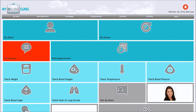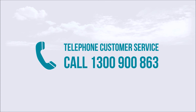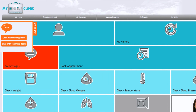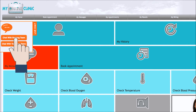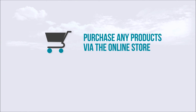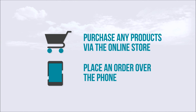It's easy to reach My Online Clinic customer service for help with general inquiries. For telephone customer service, call 1300 900 863 to speak with a nurse or a technician. You also have the option to live chat with a technical support officer or nursing support. You are able to purchase products and medical devices via the online store or you can place an order over the phone.